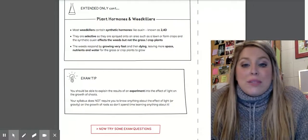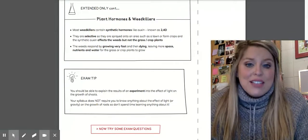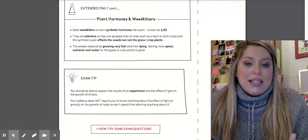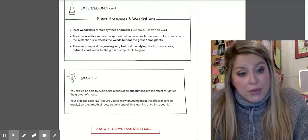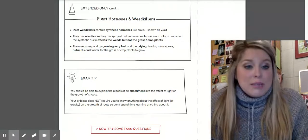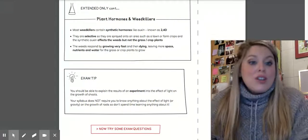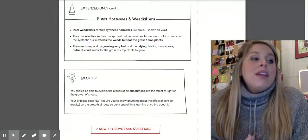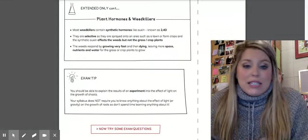Ultimately, the weeds respond by growing very, very fast. And then they die because they grow so fast. And that leaves more space, nutrients, and water for the grass or crops or plants to grow. That's how a weed killer is going to work. It targets whatever. The auxin is going to target whatever weed specifically that you're dealing with. Through auxins, cause that weed to grow so quickly that it can't sustain life. It will die off, thus creating a better chance of survival for the good stuff that's around it, like your grass and plants and crops.